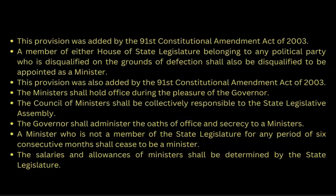This provision was added by the 91st Constitution Amendment Act, 2003. A member of either house of the state legislature belonging to any political party who is disqualified on the grounds of defection shall also be disqualified for appointment as a minister — this provision was also added by the 91st Constitutional Amendment Act of 2003. The ministers shall hold office during the pleasure of the Governor. The Council of Ministers shall be collectively responsible to the state Legislative Assembly. The Governor shall administer the oaths of office and secrecy to the ministers. A minister who is not a member of the state legislature for any period of six consecutive months shall cease to be a minister. The salaries and allowances of ministers shall be determined by the state legislature.